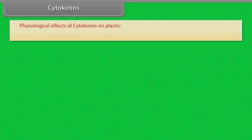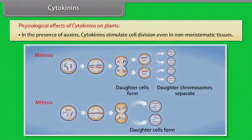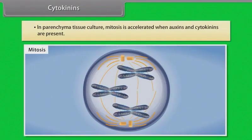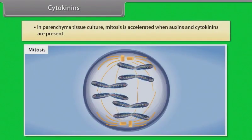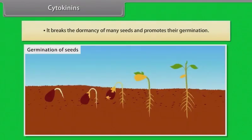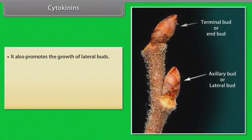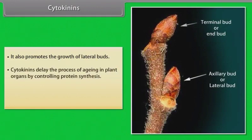Physiological effects of cytokinins: In the presence of auxins, cytokinins stimulate cell division even in non-meristematic tissues. In parenchyma tissue culture, mitosis is accelerated when auxins and cytokinins are present. Cytokinins break the dormancy of many seeds and promote their germination. They also promote the growth of lateral buds. Cytokinins delay the process of aging in plant organs by controlling protein synthesis, and help in accumulation of salts in plant cells.